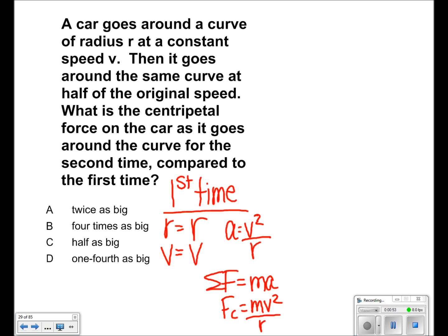For the second time, we are given that radius is still equal to r, while velocity is equal to v over 2, since it is half of the original speed.